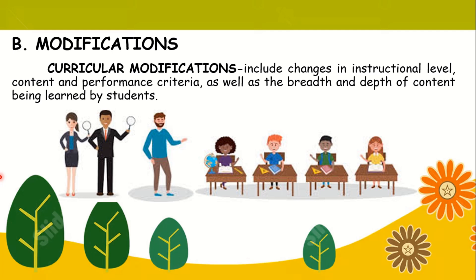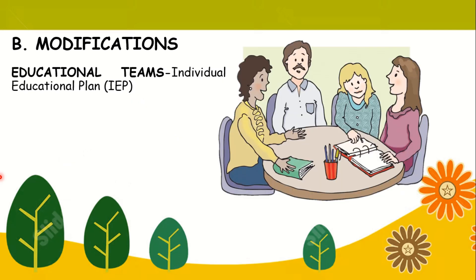Students with disabilities or additional needs may be given more, less, or different content and resource materials altogether. They may also be assessed using different standards that are more appropriate to the student's needs and abilities, such as being provided with fewer objectives, shorter lessons, or a smaller number of vocabulary words to learn. Those responsible for instructional planning may indicate curricular modifications in the student's Individual Education Plan, or IEP. Such modifications are needed so that students also have access to the general education curriculum.